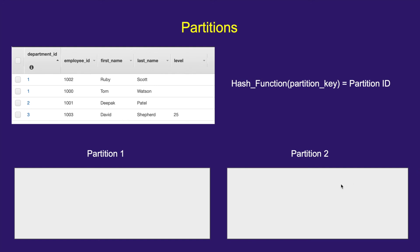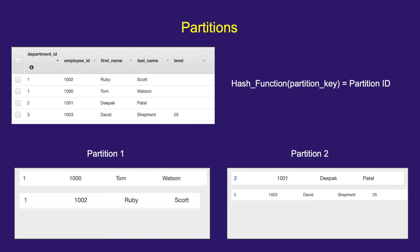Let's look at how the data we inserted is distributed across partitions. The partition key is passed into a hash function maintained by DynamoDB, which returns a partition ID. The partition ID tells DynamoDB where to actually insert those items. Based on the partition IDs, items are distributed across partitions — in our example we assumed two partitions, but if you have more partitions it distributes accordingly.